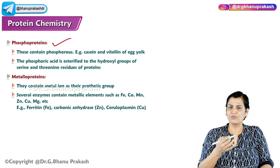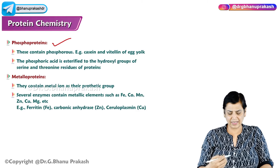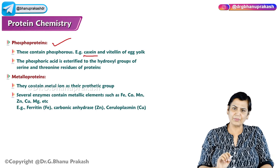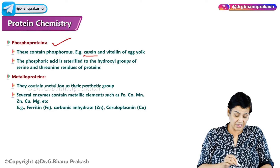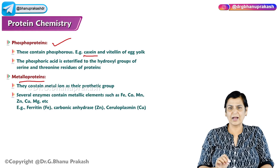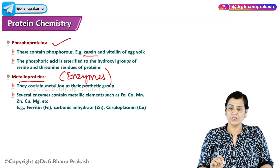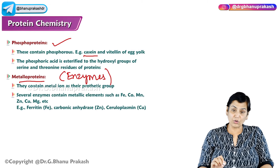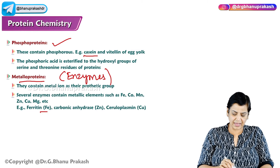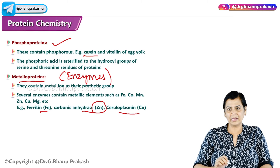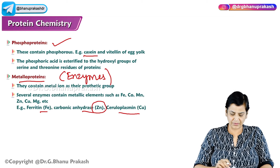Phosphoproteins have phosphate present with the protein. The example is casein, which is the principal protein present in milk. Metalloproteins contain a metal ion. For example, many enzymes require a cofactor — ferritin and carbonic anhydrase require zinc; ceruloplasmin cannot work without copper.